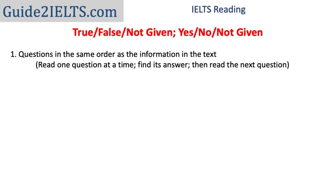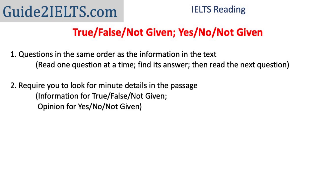The questions are in the same order as the text. We read one question at a time, figure out its answer, and then move on to the next one. These question types require you to look for minute details in the passage. You're looking for information in case of True, False, Not Given, and opinions in case of Yes, No, Not Given.